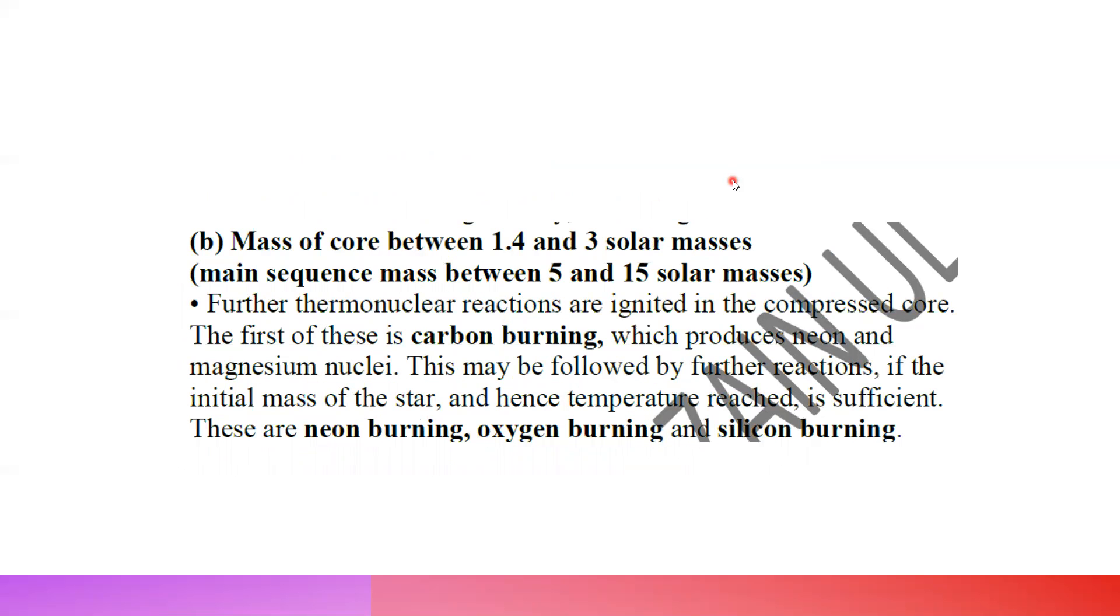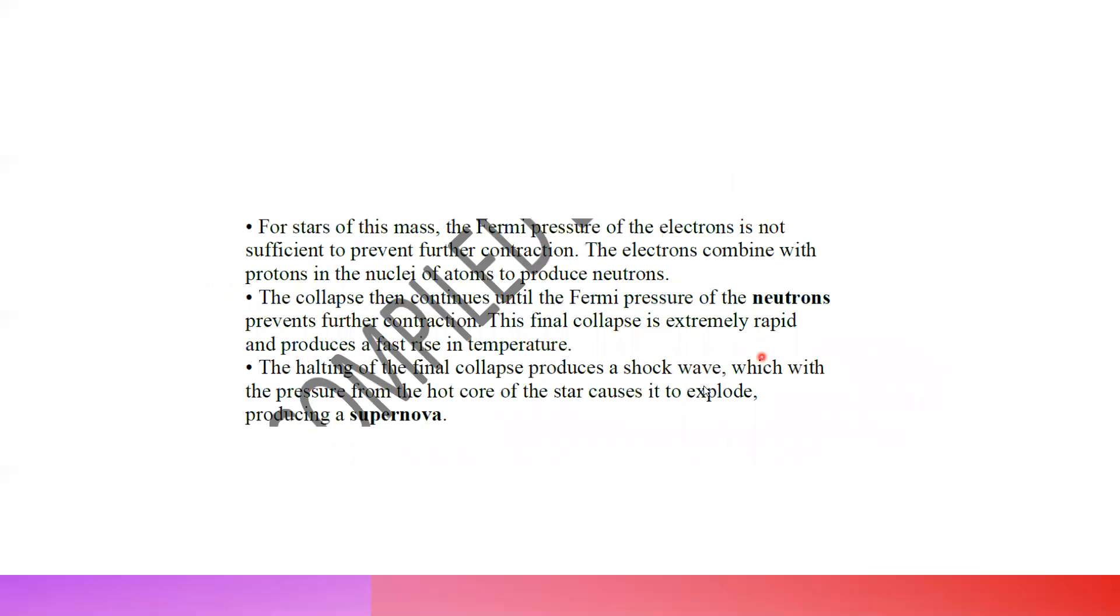If the mass of the core is between 1.5 to 3 solar masses, or 5 to 15 times the solar mass, then further thermonuclear reactions take place. First carbon burns, then other elements. The star reaches red giant, turns into a blue giant, and then there is a supernova, which results in the formation of a neutron star or a black hole.